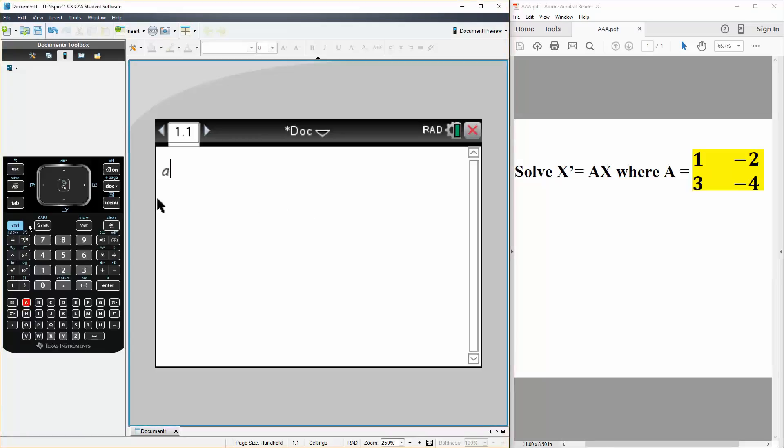We first define A. So we say A is defined as a 2 by 2 matrix, so we hit this icon right here, hit 2 by 2, and write what we have. So 1, 3, negative 2, and the last one was negative 4.